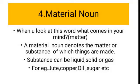Next, material noun. What do you understand about the word 'material'? When you look at this word, what comes to your mind? Matter. A material noun denotes the matter or substance of which things are made. The substance can be liquid, solid, or gas. For example: jute, copper, oil, sugar, etc.